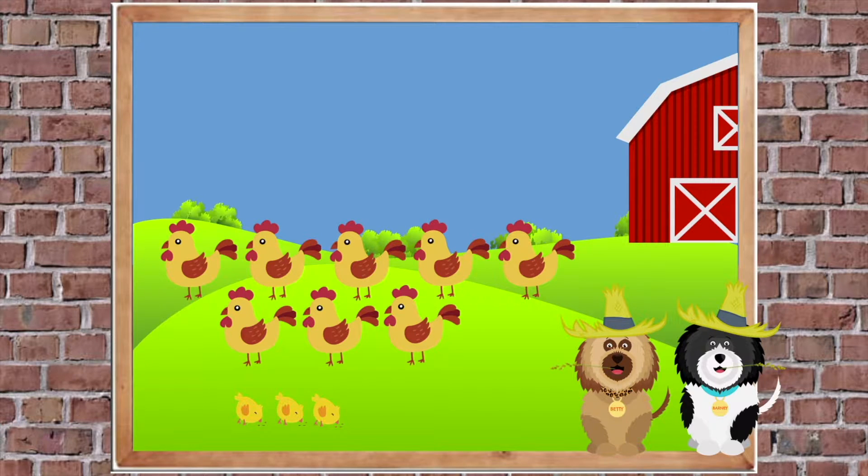Right, let's check together. There's one, two, three, four, five, six, seven, eight. There are three chicks and eight chickens. Good counting. Let's see what else they saw at the farm.